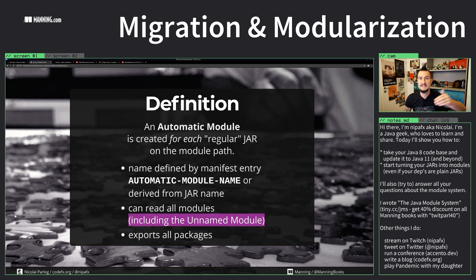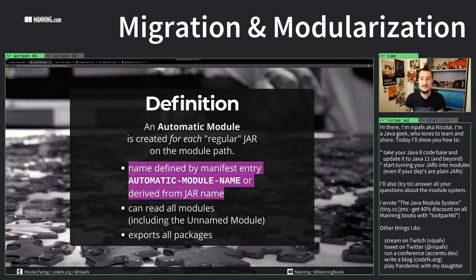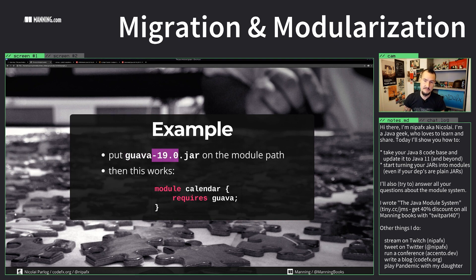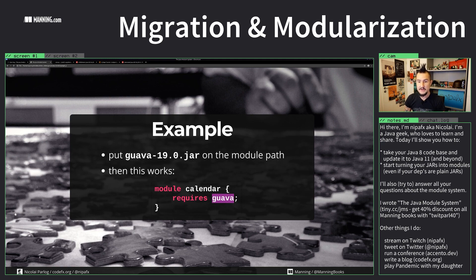Very importantly, automatic modules can also read the unnamed module — that's what gives them their bridge capability. And crucially, they do have a name, so you can reference them. The name is ideally defined by a manifest entry, or alternatively derived from the jar file name. For example, if you have guava-19.0.jar on the module path and it has no manifest entry, Java will use the jar name, drop the version, and give it the name 'guava'. Then you can reference it with 'requires guava'.